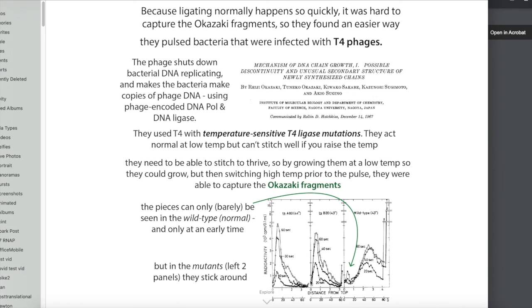So you can see the wild type, so the normal, the non-mutant version is here. You can see, you can like barely see these fragments even at a short time period and then they totally disappear. But with this temperature sensitive mutant, they, you can see that these Okazaki fragments form and they stay formed even over time. So this is showing that these Okazaki fragments are indeed forming and now they can't be ligated together. They stick around and you can detect them.